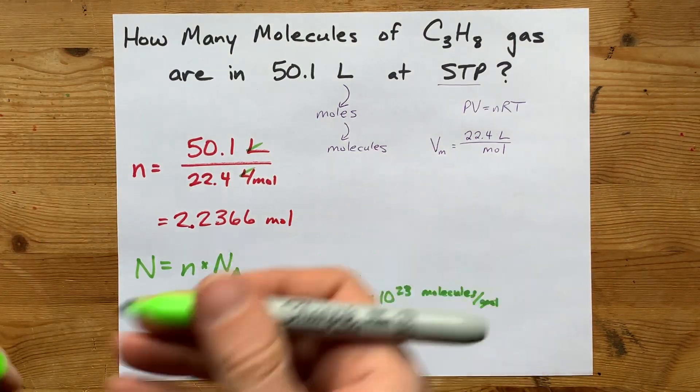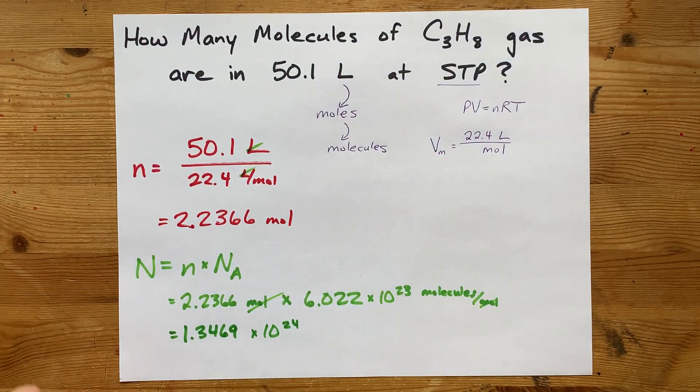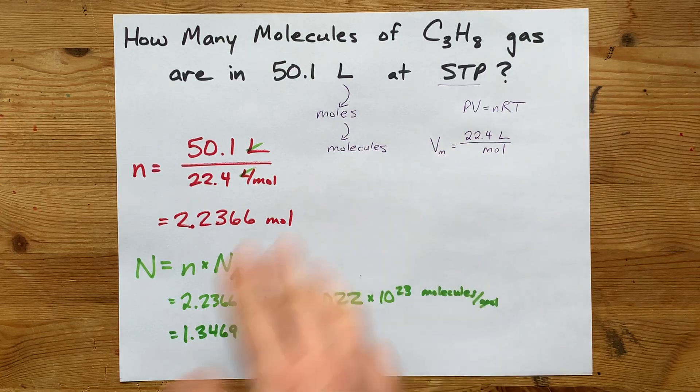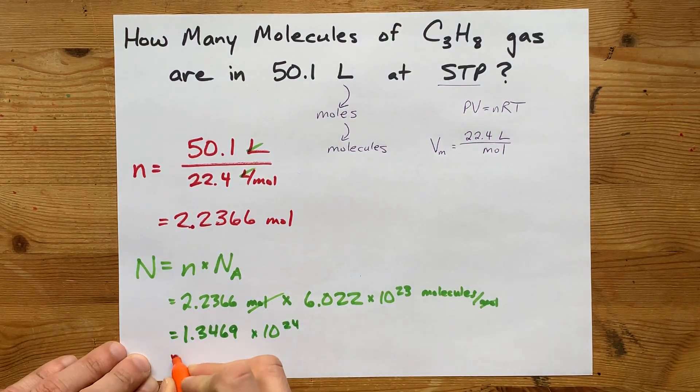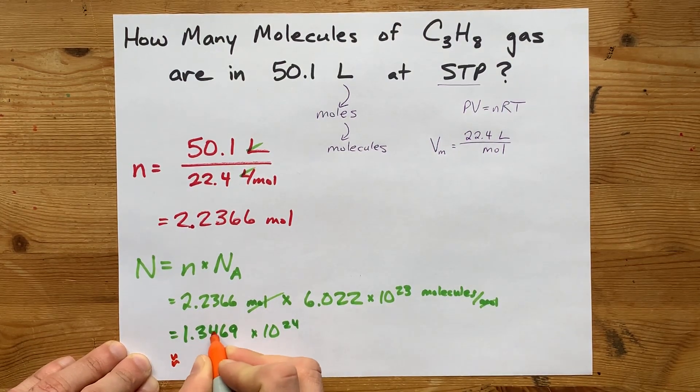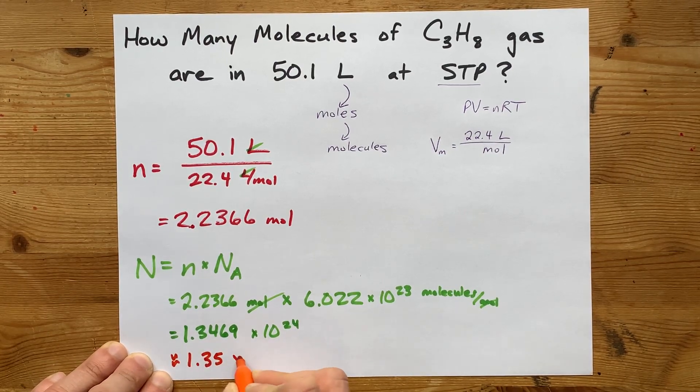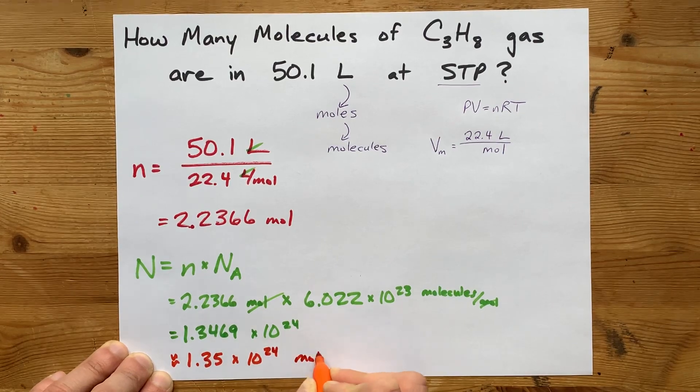So this is 1.34. I'm going to go 6.9 times 10 to the 24 molecules. And we should also do significant figures here. This is three significant figures. That was three significant figures. So I need three significant figures. 1, 2, 3. That 4 gets rounded up to 1.35 times 10 to the 24 molecules.